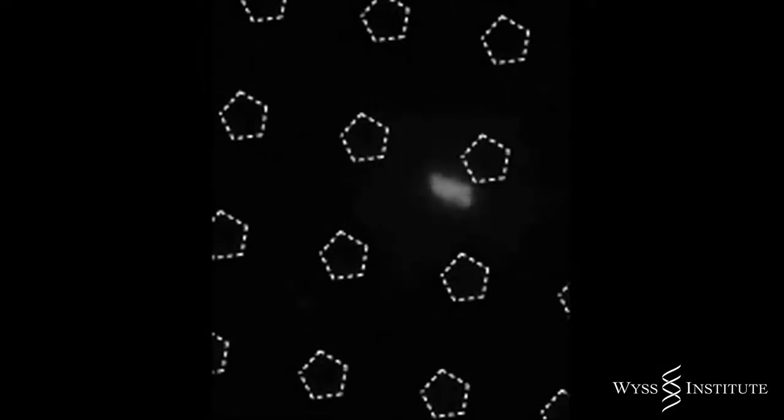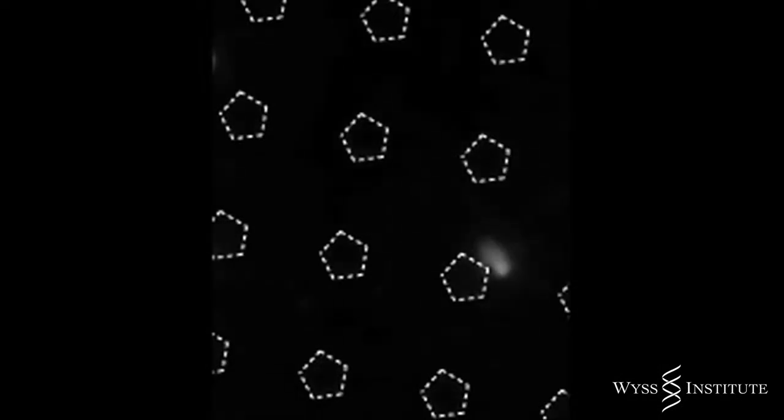Here's a magnified view showing a migrating white blood cell, making its way through the first capillary cell layer, wriggling through the pentagonal hole in the flexible membrane, and then moving out of focus to the other side.